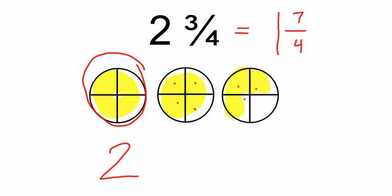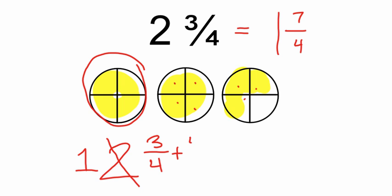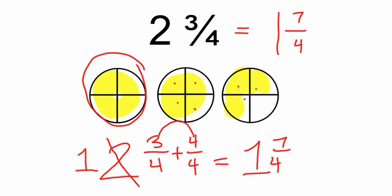Essentially, what I've done is taken my original mixed number and gotten rid of one whole, bringing that two down to a one. When I take a whole out, I'm taking out four-fourths because that's how many are in one whole. So I add that to the fraction, giving me one and three plus four, which is seven-fourths.